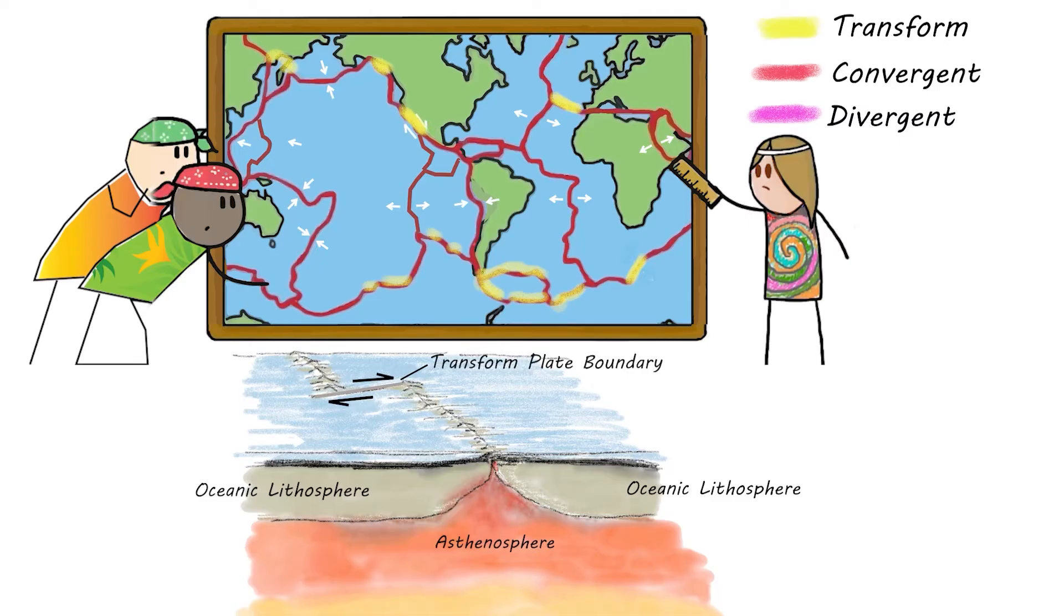Transform plate boundaries are where two plates slide sideways past each other. A good example is the San Andreas Fault of California.